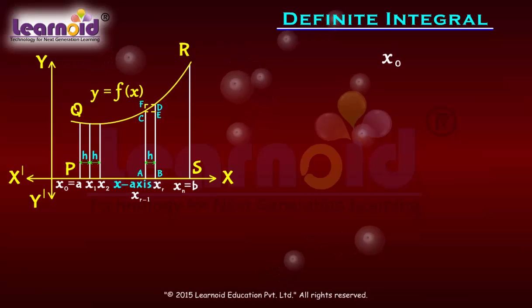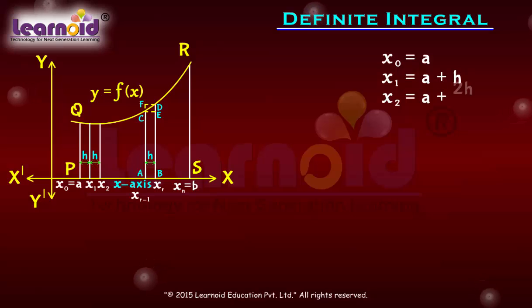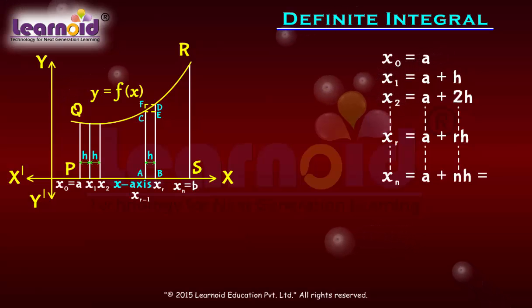So x₀ = a, x₁ = a + h, x₂ = a + 2h, xᵣ = a + rh, and so on, till xₙ = a + nh which is equal to b.